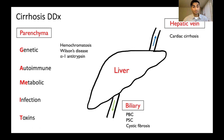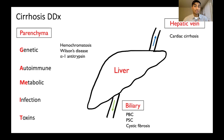Then there's alpha-1 antitrypsin deficiency. Our body normally has alpha-1 antitrypsin that helps us defend against different toxins in the liver and the lungs. If you have a deficiency, you're at higher risk for those toxins causing damage to these organs.